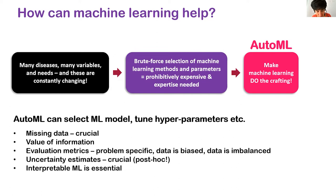The advantage of AutoML is that it can craft and select machine learning models and tune their parameters effectively. It can handle missing data, identify what information is relevant for what prediction and for what subpopulation, and evaluate performance using diverse metrics. This is something Mihaela wants to explore with the clinician panelists.